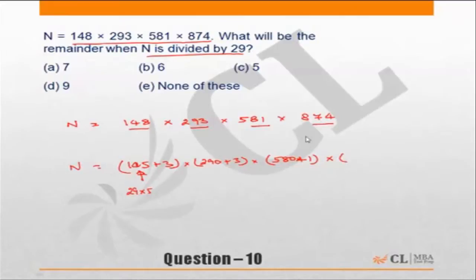Into 874. Now 29 into 3 is 87, so 29 into 30 should be 870. So 870 is also a multiple of 29 plus 4.